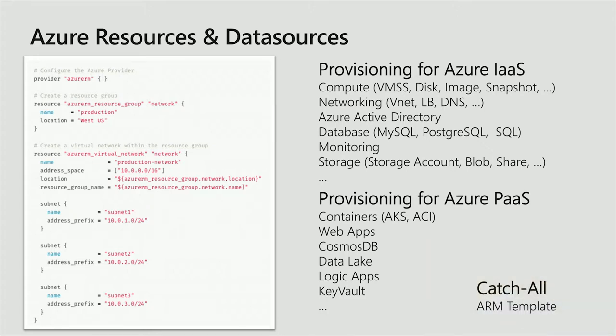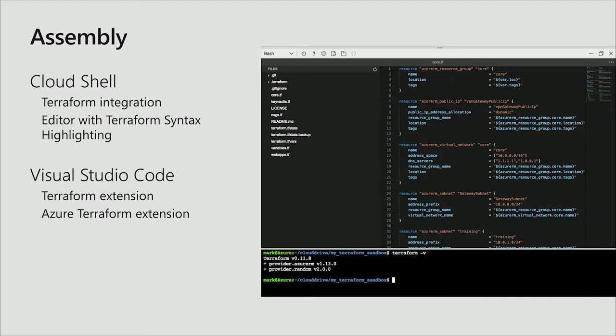There is also a catch-all option. When you don't have a specific provider for something you're trying to achieve, you can still chain it on an ARM template using JSON syntax. It's a little bit different, but it allows you to extend Terraform capability for a module that might not exist right now, such as when a service is in preview in Azure.